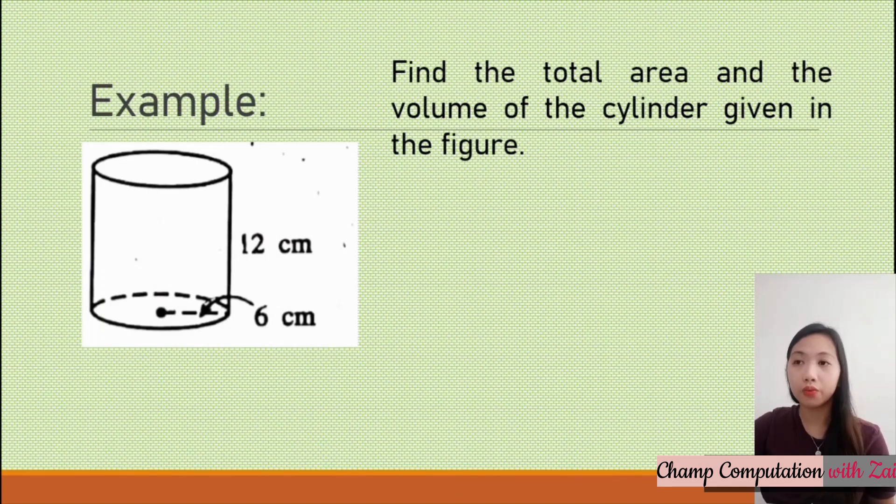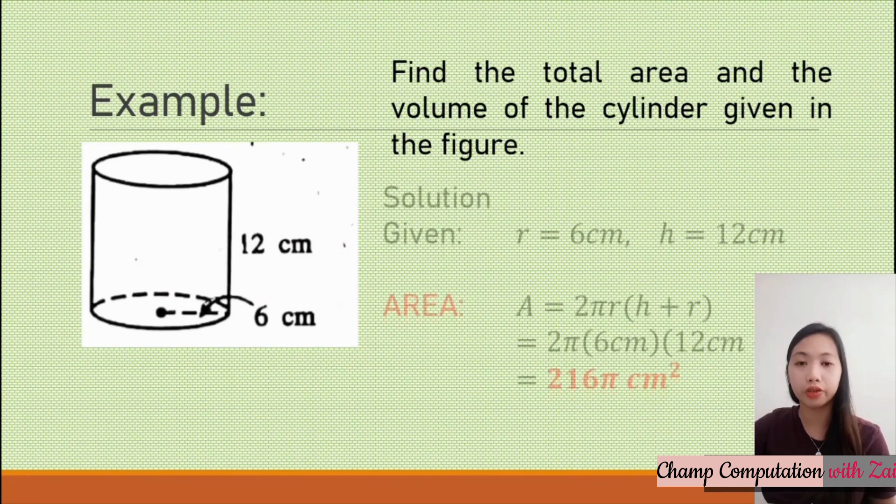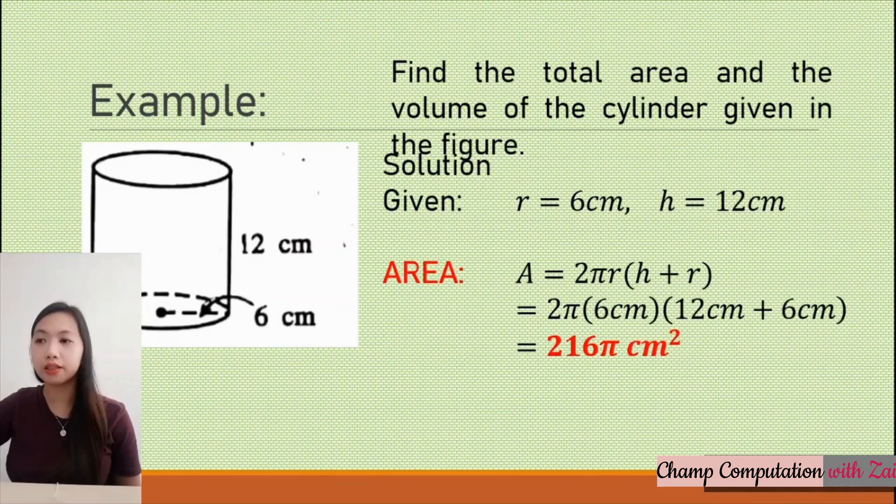For example, find the total area and the volume of the cylinder given in the figure. We have the figure here. Given, we have the radius of 6 centimeters and the height of 12 centimeters.